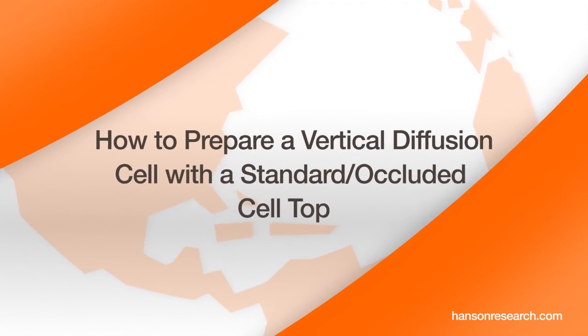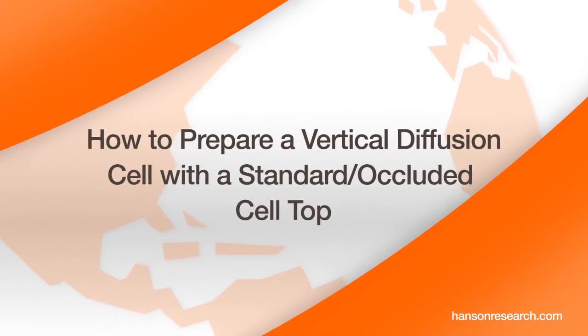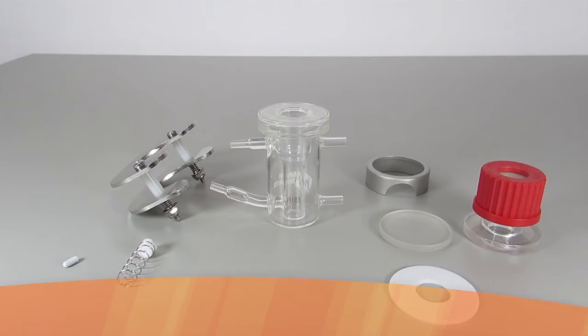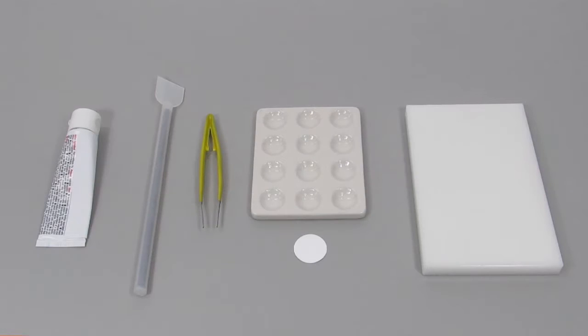How to prepare a vertical diffusion cell with the standard occluded cell top. The VDC components are: vertical diffusion cell, helix kit, clamp, cell ring, glass disc, dosage wafer, and open cell top. The tools and materials needed are: dosage, spatula, and tweezers.